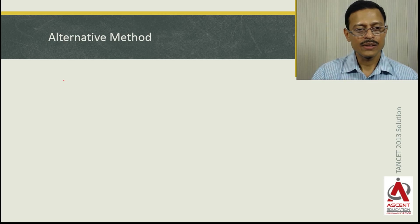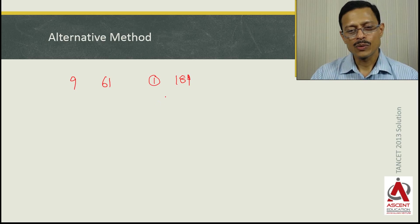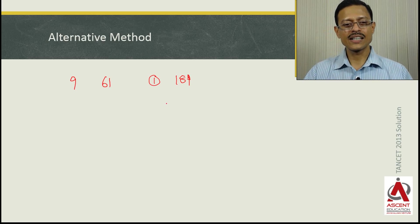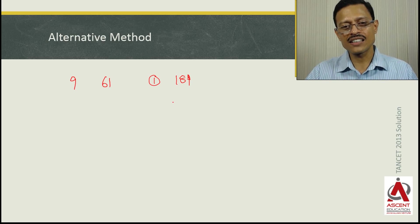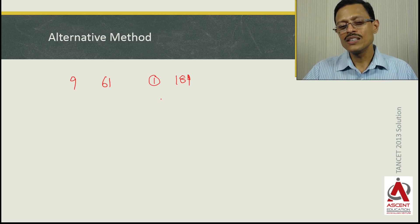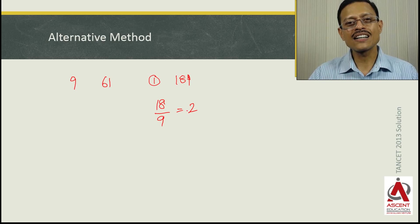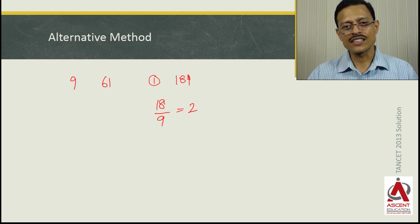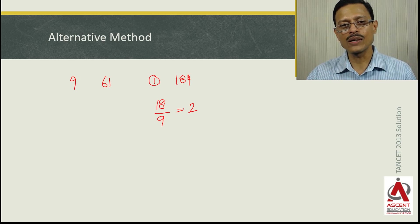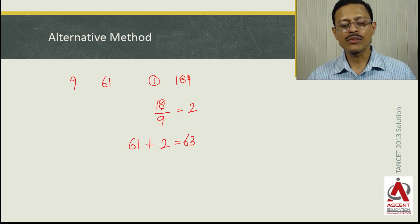Now let's try the alternative method. There are 9 students, the average mark is 61, and one student's mark is increased by 18. The net effect is that the increase in average is nothing but what has been given to each student if divided equally — that is 18 divided by 9 equals 2. So 61 is the old average, it's gone up by 2, giving the new average as 63. The alternative method saves you time.